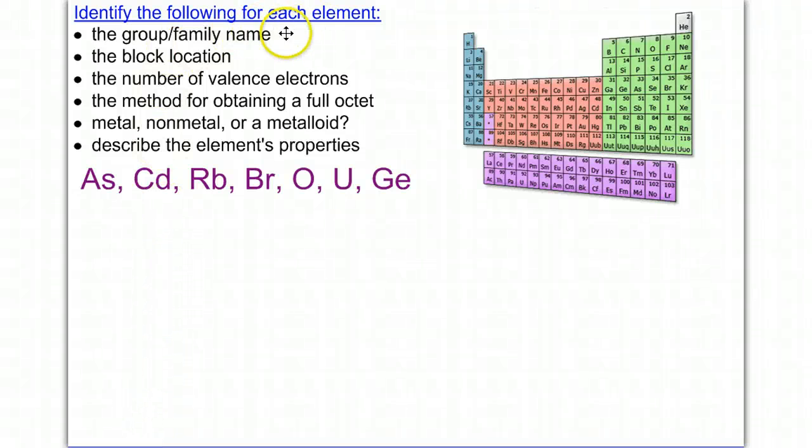We're going to identify the following for each of these elements: the group and family name, the block location, the number of valence electrons, the method for obtaining a full octet if applicable, whether or not it's a metal, non-metal, or metalloid, and we're going to describe each of their properties.